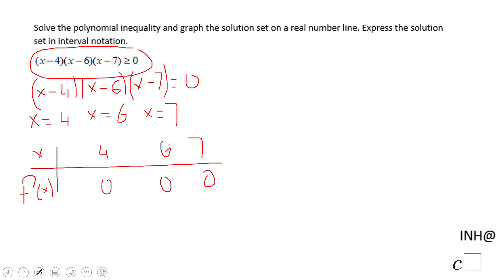And you need to find how the function behaves between these intervals. So the first interval I'm going to test is left of 4 and I'm going to use zero. So if I put zero here, I get a negative number, a negative number, and a negative number.